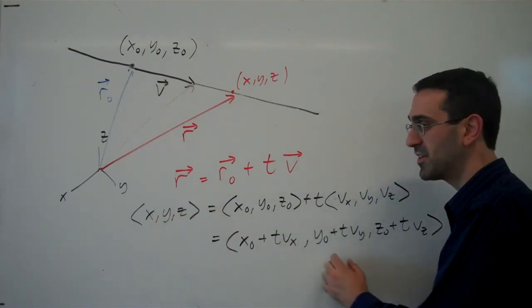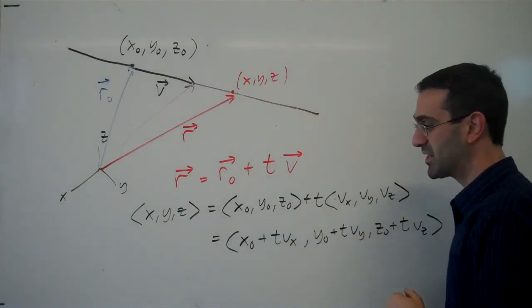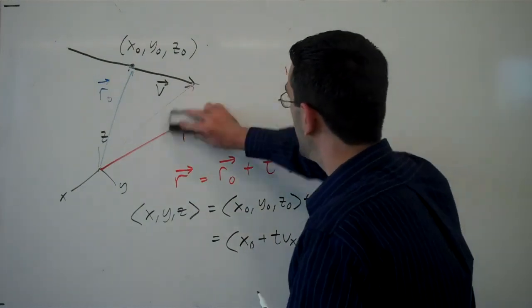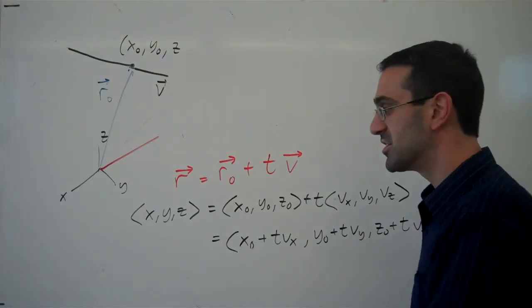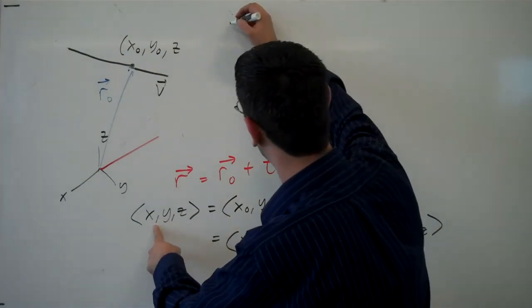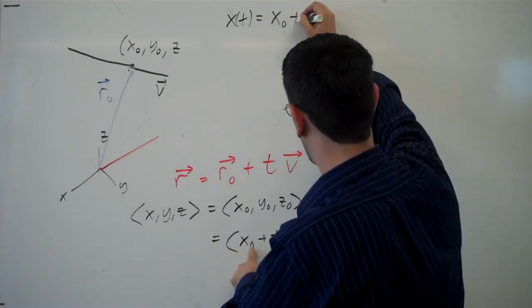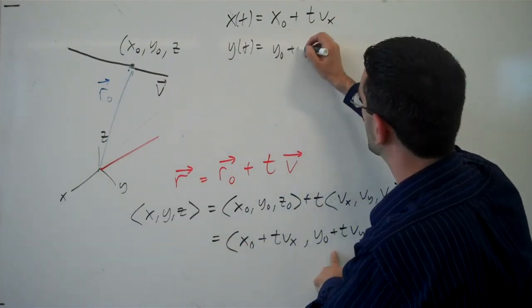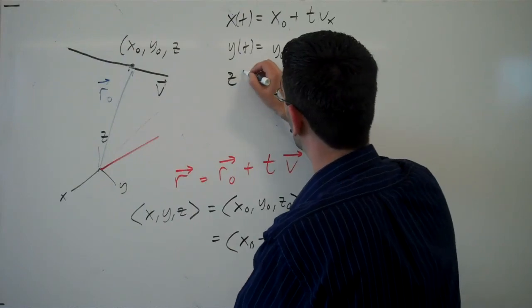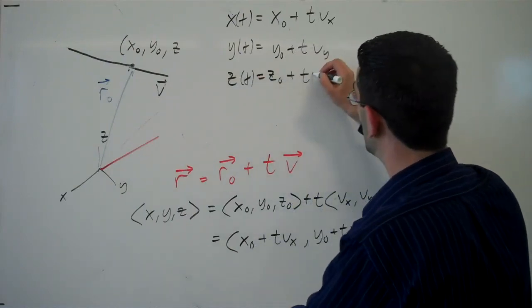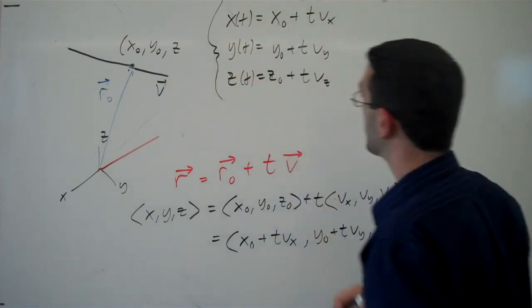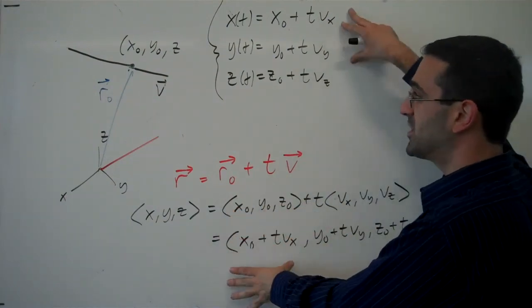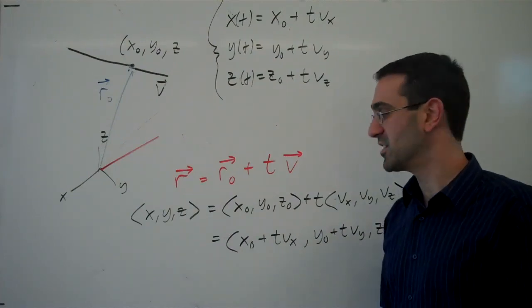Now, because this vector is equal to this vector, the x component of a point in space can be represented using this expression, y and z the same. And so we can end up writing a set of parametric equations that are equivalent to this vector equation. We can say x of t is x naught plus t v sub x, y is equal to y naught plus t v sub y, and z is equal to z naught plus t v sub z. And this set of parametric equations is equivalent to this vector equation for a line. So we can write an equation of a line in three space using either of these two formats.